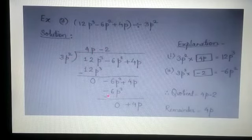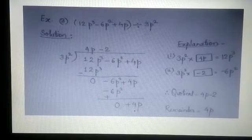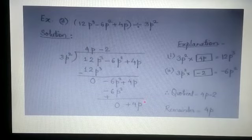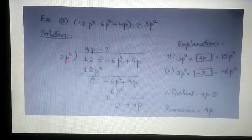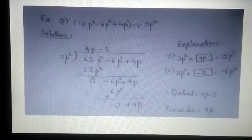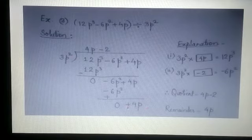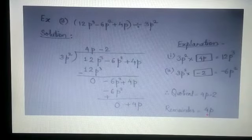Minus 2 multiplied by 3p square gives minus 6p square. We are subtracting, so the minus sign changes to plus — it gets cancelled and 0 remains. Now 4p is left. The index of p here is only 1, but here the power of p is 2 — the index is 2. This power is less than the degree of the divisor p, so we cannot divide further and we stop our division here. This will be your remainder. So the quotient is 4p minus 2 and the remainder is 4p.